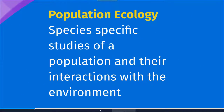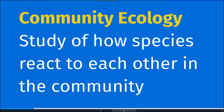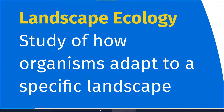Population ecology deals with species-specific studies and deals specifically with a group or a population within a certain habitat or biome, and how that population interacts with the environment. Community ecology looks at how species interact with each other within a habitat or within a community. Landscape ecology is the study of how organisms adapt to a specific landscape, and this tends to be more terrestrial-focused.